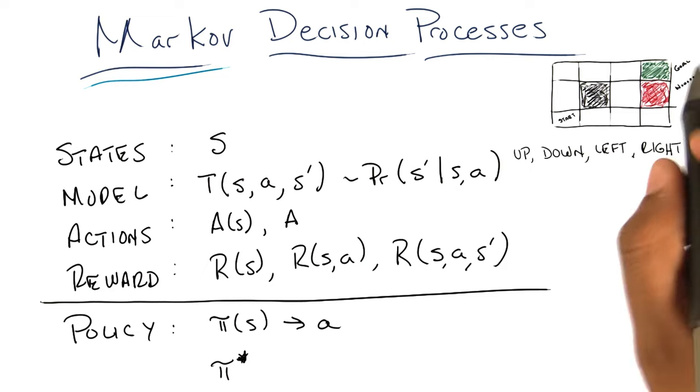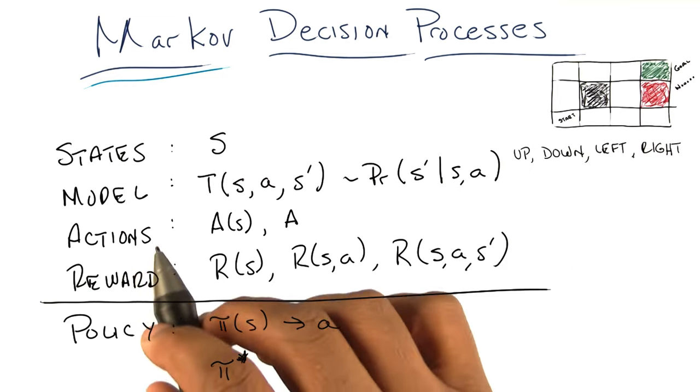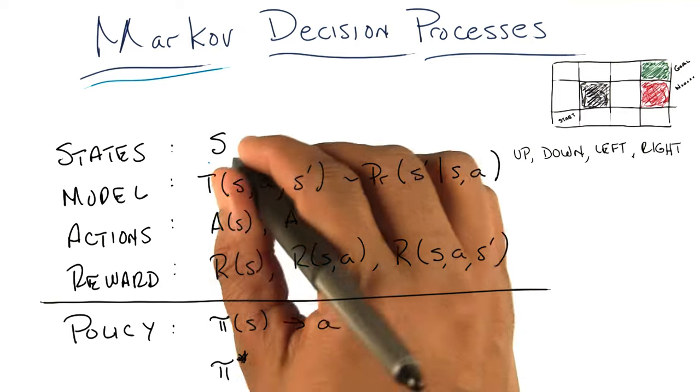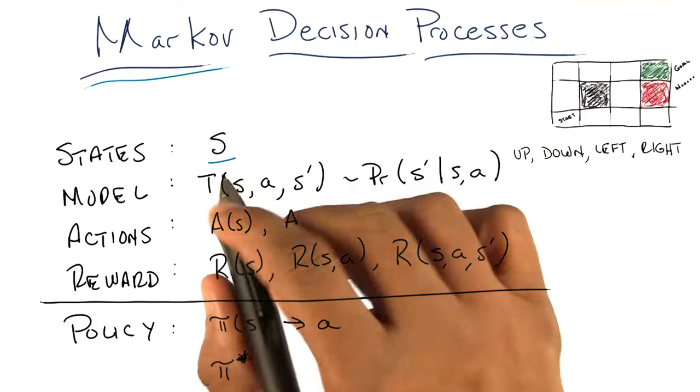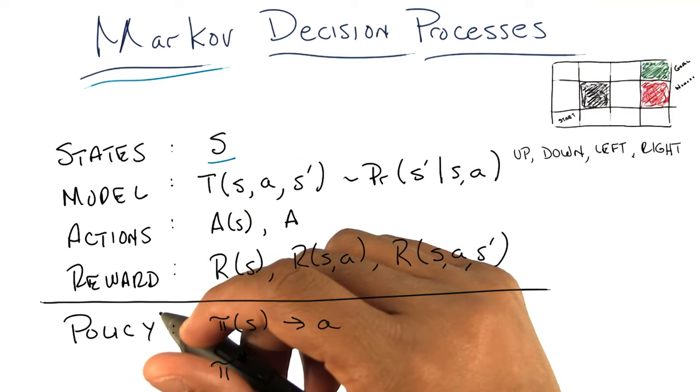A Markov Decision Process tries to capture worlds like this one by dividing them up in the following way. We say that there are states. States are a set of tokens that somehow represent every state, for lack of a better word, that one could be in.